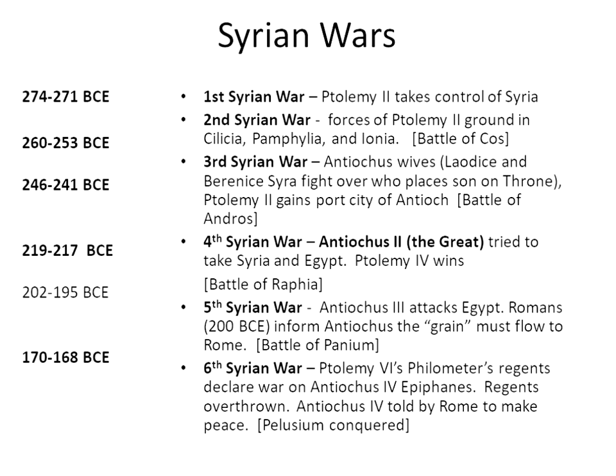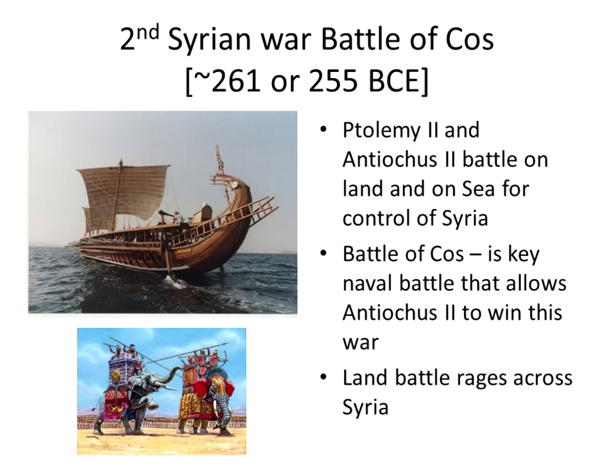The Romans in 200 BC informed Antiochus that grain must flow to Rome, so please do not impact that. Ptolemy IV's regents declare war on Antiochus IV. The regions are overrun and Antiochus IV is told by Rome to make peace so the grain may flow. If this sounds like a line from a movie, that is the same idea — the grain must flow.